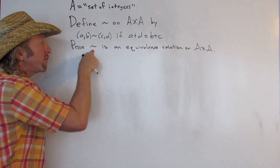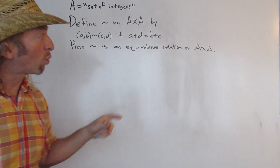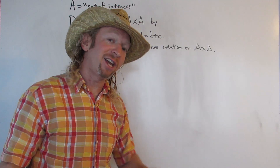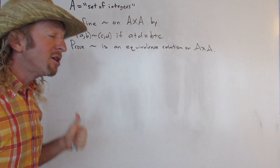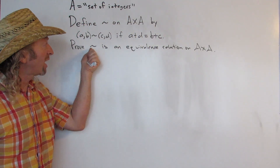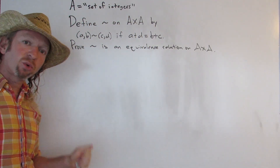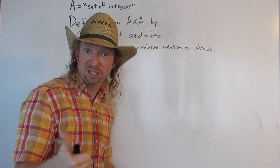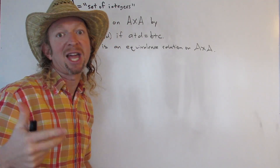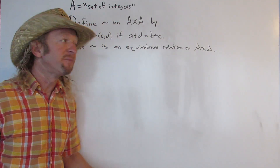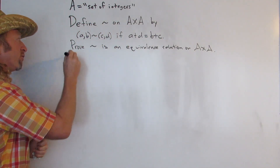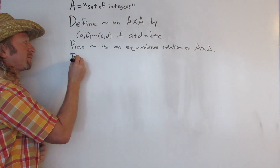We're going to prove that twiddle is an equivalence relation on A cross A. Recall that a relation is an equivalence relation if it is reflexive, symmetric, and transitive. Let's go through the proof.